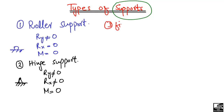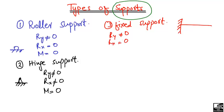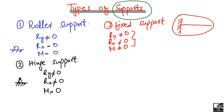The third support is the fixed support. Fixed support is generally represented by a vertical line with some inclined lines and a straight line — that is the symbol for a fixed support. This support can take the vertical reaction, horizontal reaction, and moment — so all three are not equal to zero. It is also commonly used in cantilever beams.